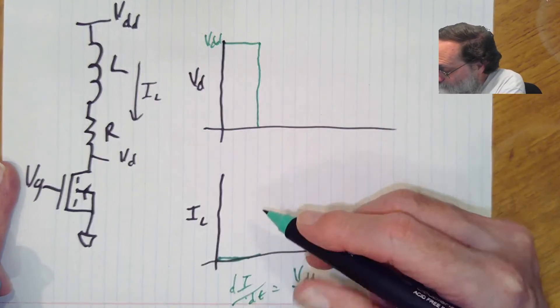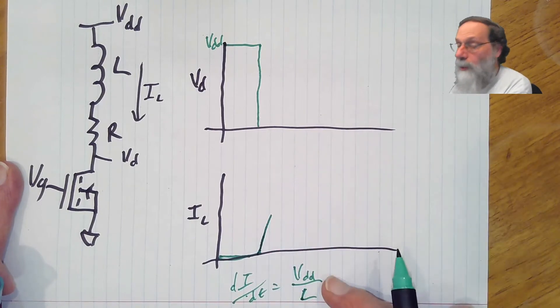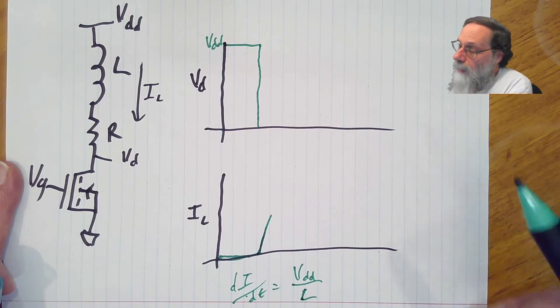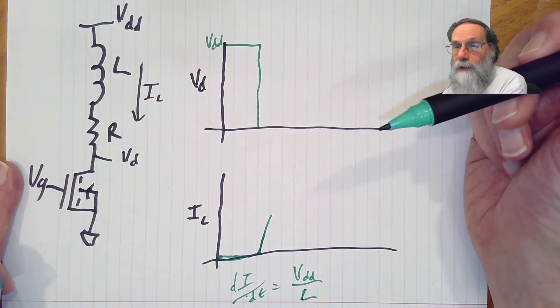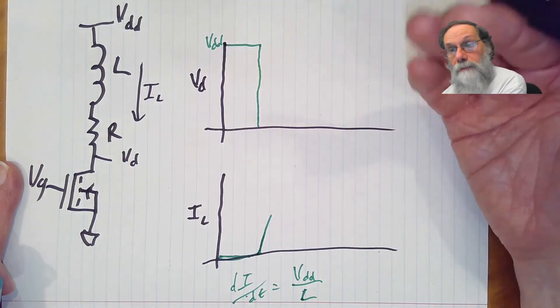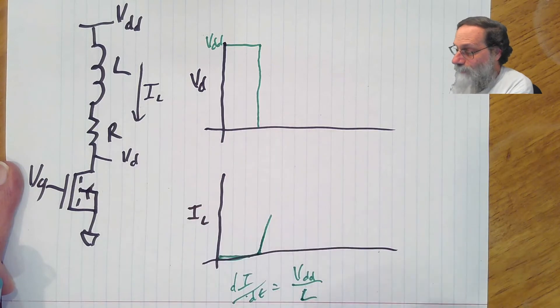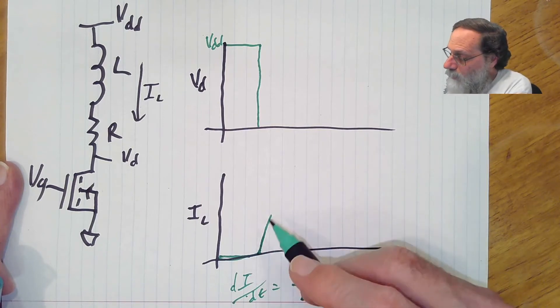The current is going to increase with this slope. Large inductor, slow rise. Small inductor, rapid rise. But as the current increases, the voltage across the resistance increases, and that means the voltage across the inductor decreases.